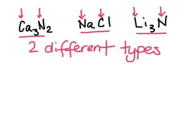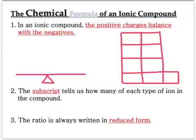Now that we've looked at how to name ionic compounds, we are going to look at writing the chemical formula for ionic compounds. In an ionic compound, in order to write it, we have to get the positive charges — that is the metals — to balance with the negative charges. To do this, I'm going to show you two different methods, one of which I call the teeter-totter method.